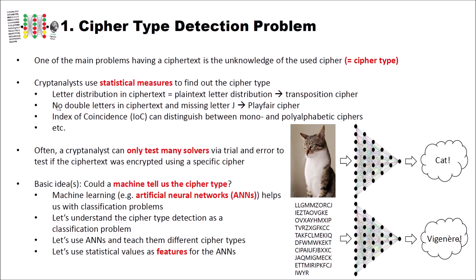There are many more statistical measures cryptanalysts use to determine the type of a cipher. But often cryptanalysts can only test using many solvers via trial and error to check if a ciphertext was encrypted using a specific cipher. So at this point, we thought there had to be another approach — maybe a machine could help us. The basic question is: could a machine tell us the cipher type so we don't need to perform all those statistical measures?